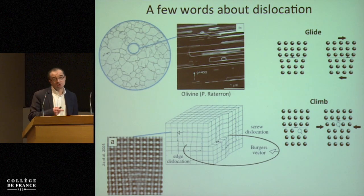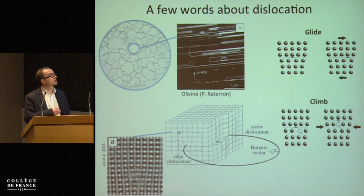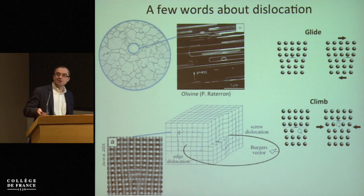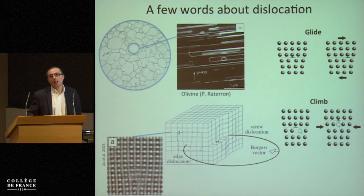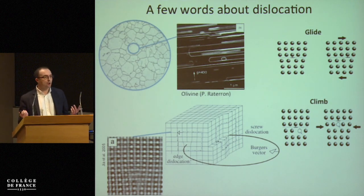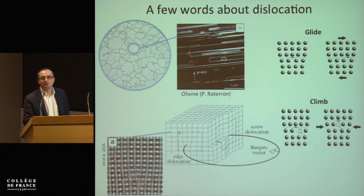Regarding how this defect moves in a crystal, there are two different motions. The first is glide: when you apply stress, the dislocation starts to move in its glide plane. The second way for a dislocation to move is called climb — this is what happens when a dislocation emits or absorbs point defects, causing the dislocation to move out of its glide plane.